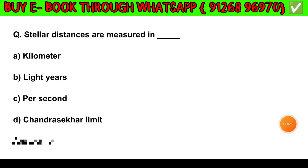Question number 10. Stellar distances are measured in: Option A — AU. Option B — Light year. Option C — Parsec. Option D — Centimetre. The answer is Option B: Light year.